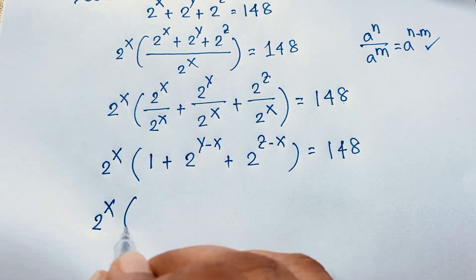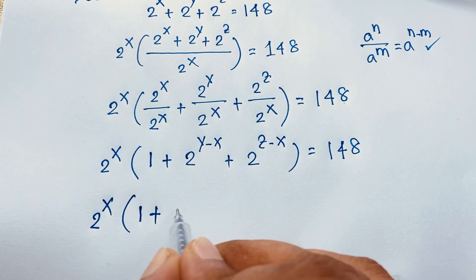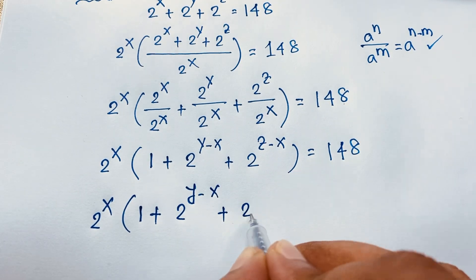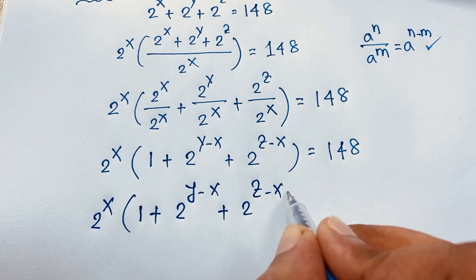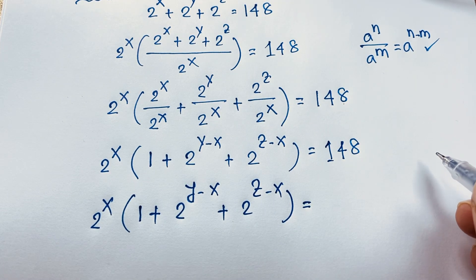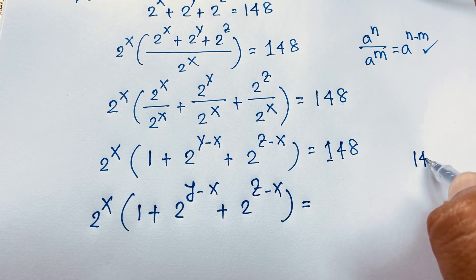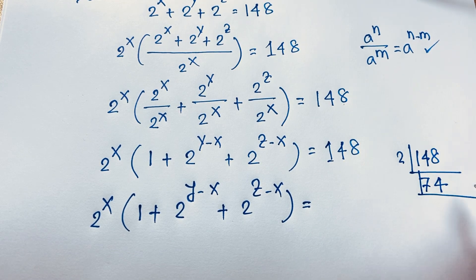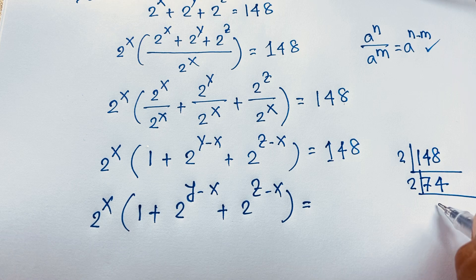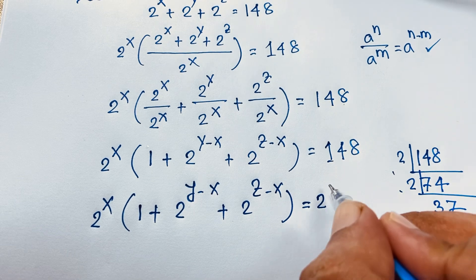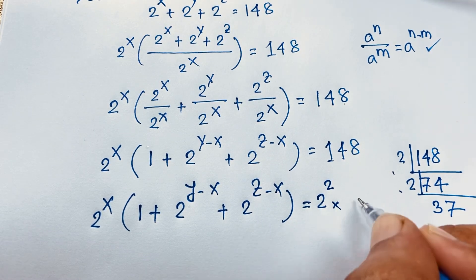So 2 to the power x times the quantity 1 plus 2 to the power y minus x plus 2 to the power z minus x is equal to 148. Now, 148 divided by 2 is 74, and 74 divided by 2 is 37, which is a prime number. So 148 equals 2 squared times 37.